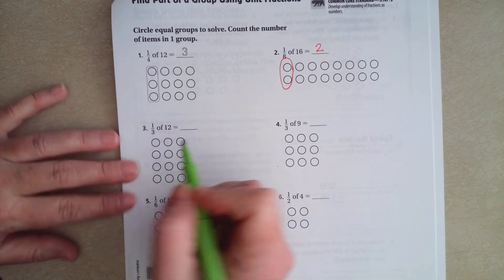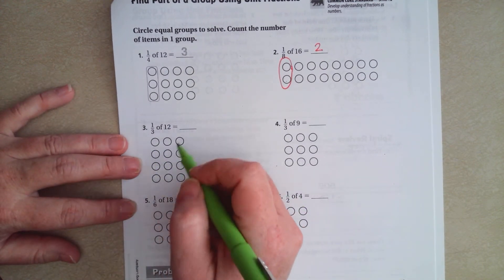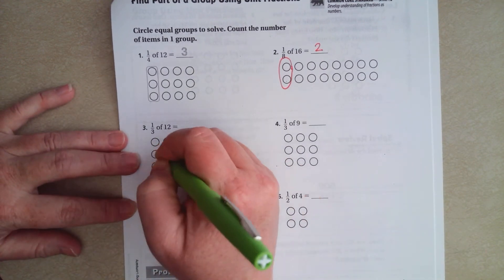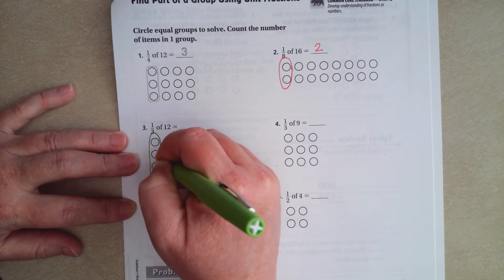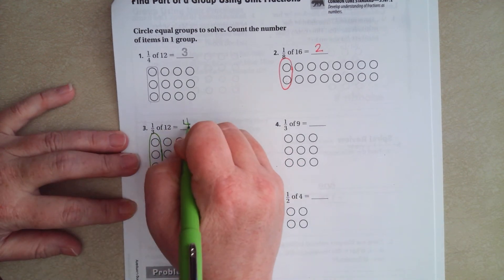1/3 of 12. So they're in 1, 2, 3 columns. I'm going to circle 1 of those 3 columns. How many are in that column? 4.